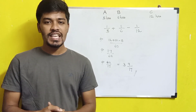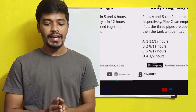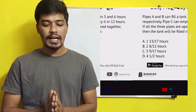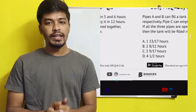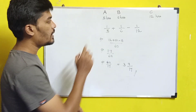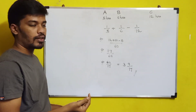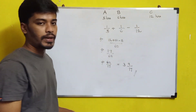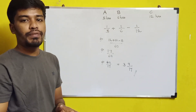For the third question, it is quite easy. Pipes A and B can fill a tank in 5 and 6 hours respectively. Pipe C can empty it in 12 hours. If all three pipes are open together, then in how many hours will the tank be filled? This is the pipes and cistern concept. Pipe A fills in 5 hours, Pipe B fills in 6 hours, and Pipe C empties in 12 hours.